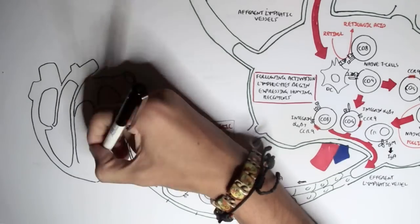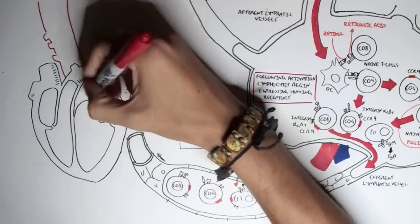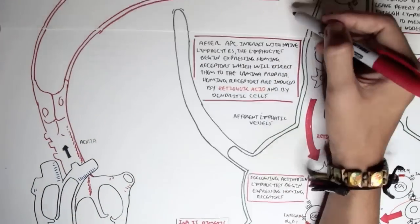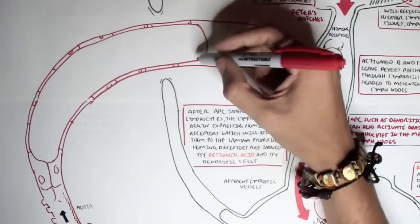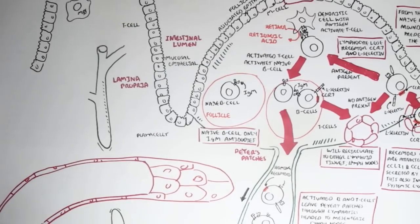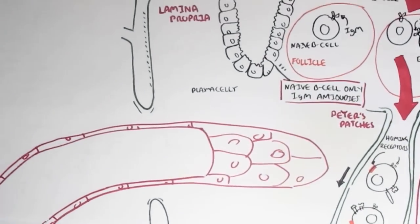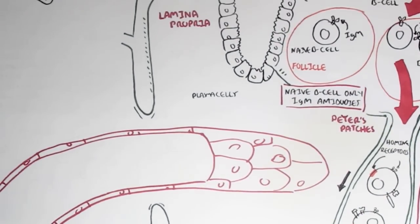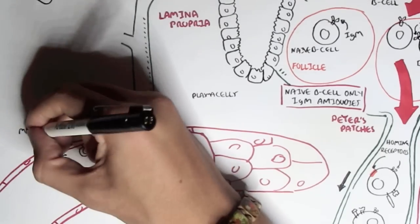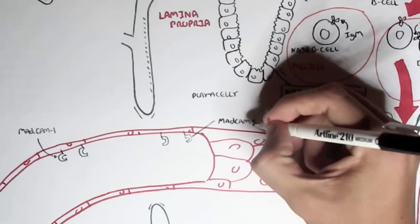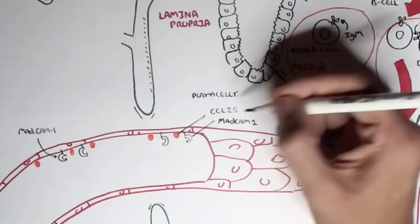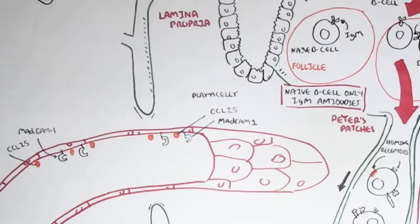These lymphocytes and plasma cells will travel through the lymphatic vessel and enter the heart, which will pump these immune cells out via the aorta, so from the lymph vessel they enter the bloodstream. The lymphocytes and plasma cells travel via the bloodstream and because they have the homing receptors, the integrin and CCR9, they are able to bind to receptors on the blood vessel walls. Here we have receptors within the lamina propria called MADCAM1 and CCL25.